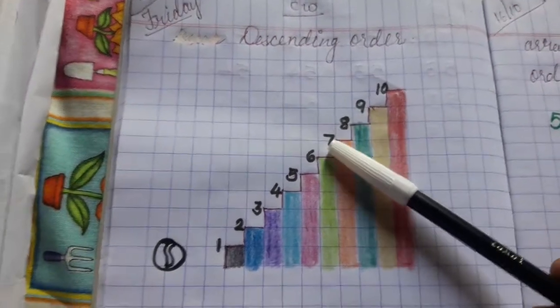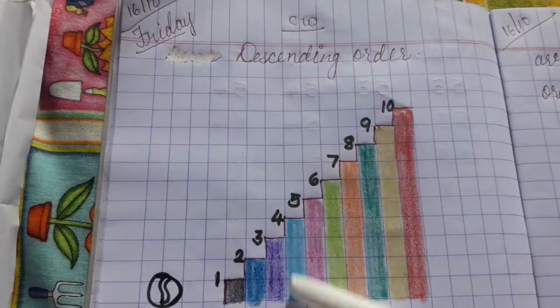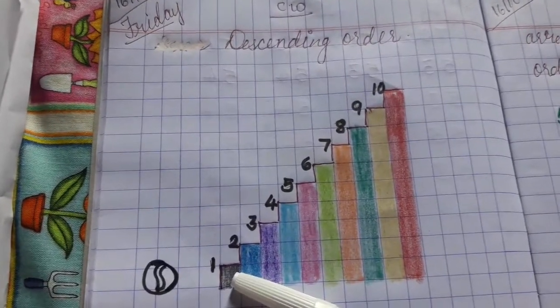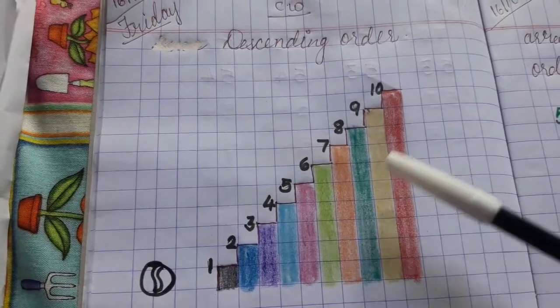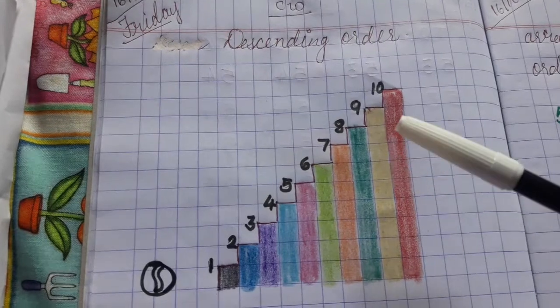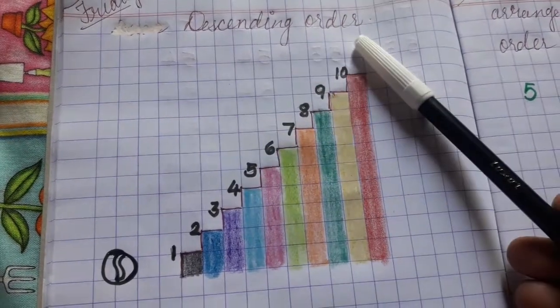can you see the stage? Each stage has numbers from 10 to 1. We will learn about descending order. Today we will learn about descending order.